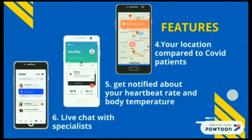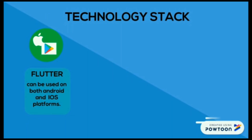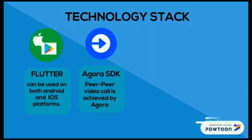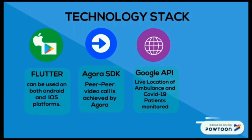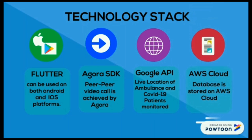You get notified on your body temperature and heartbeat rate through a Fitbit on your body. You can have a live chat with specialists regarding your health and get prescriptions. Rescue EC is developed using Flutter so that it can be used on both Android and iOS platforms. Peer-to-peer video call is achieved using Agora SDK. Google API is used to trace the live location of ambulances and monitor nearby COVID patients. The database is safely stored on AWS cloud.